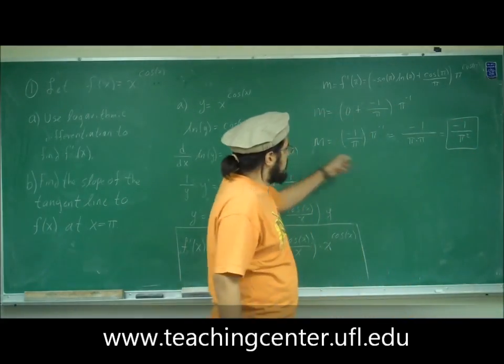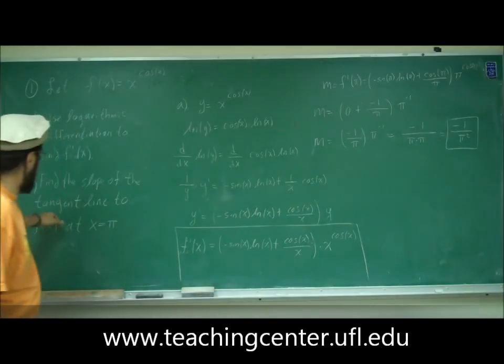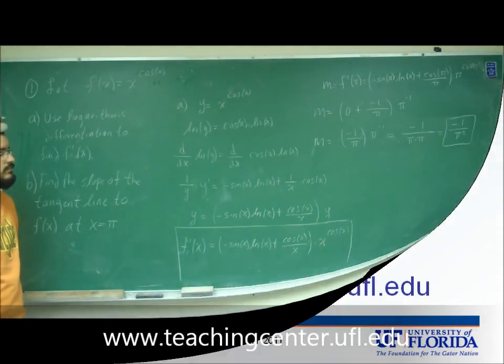Therefore, m is equal to negative 1 divided by pi squared. So that would be your slope that they're looking for, the slope of the tangent line. All right.